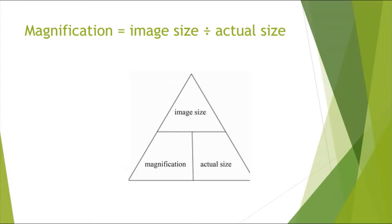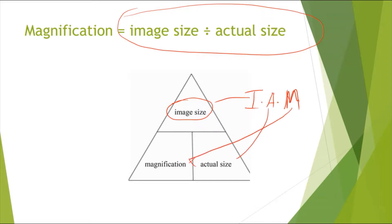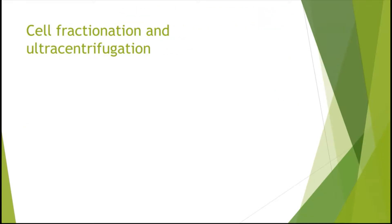You need to know this equation thoroughly as it often comes up for important marks. Magnification equals image size divided by actual size. Using the triangle: image size is on top, and magnification and actual size are at the bottom — some people call it the 'I AM' triangle. Image size at the top, actual size and magnification at the bottom.